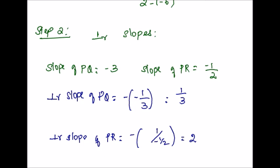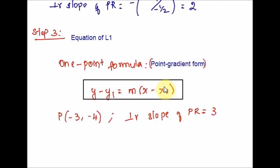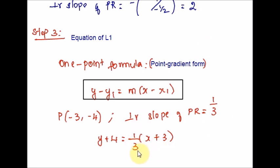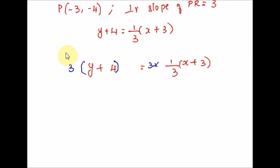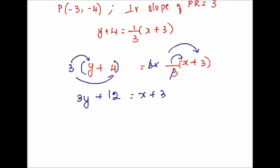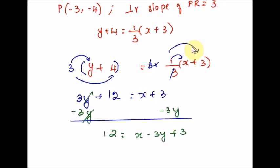Now let us find the equations for lines L1 and L2 using the one-point formula (point-gradient form). We plug in point P and the perpendicular slope of PQ, which is 1 over 3. Multiplying throughout by 3 to eliminate the denominator, we distribute, combine terms, subtract 3y from both sides, and subtract 3 from both sides, then swap sides to get the equation for line L1.